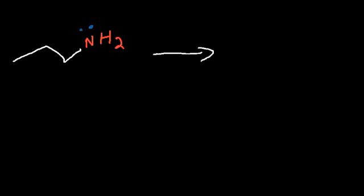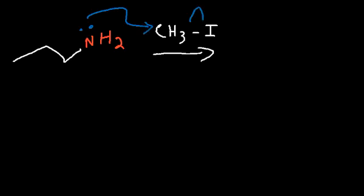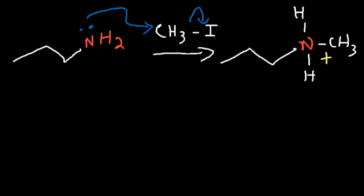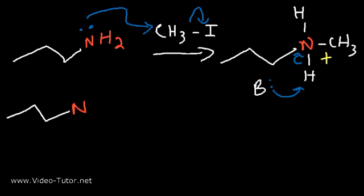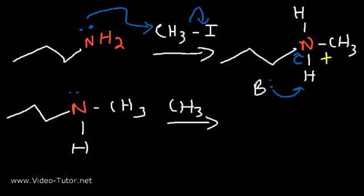The first thing we need to do is add excess methyl iodide. The nitrogen atom is going to attack the methyl group, expelling the iodide ion. So now we have a nitrogen attached to a methyl group with two hydrogen atoms. Whenever nitrogen has four bonds, it has a positive charge. We then use a base to take off a hydrogen atom, making nitrogen nucleophilic once more, and add another methyl group. We repeat this process two more times — adding excess methyl iodide, which is known as exhaustive methylation — until it has three methyl groups attached to it.